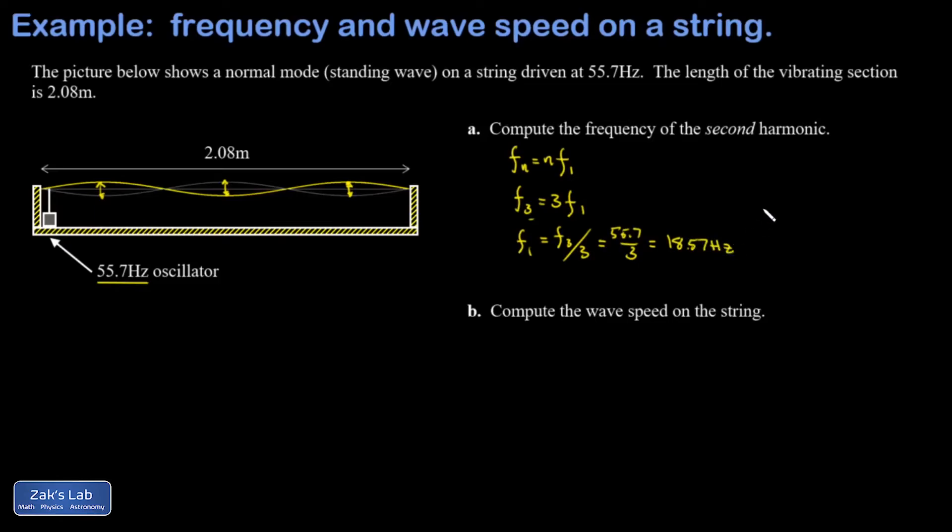And then all I do is use the same idea again. f2, the frequency of the second harmonic, is going to be twice the frequency of the fundamental. That's twice 18.57, and I arrive at the frequency of my second harmonic, and that's 37.1 hertz.